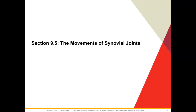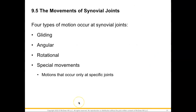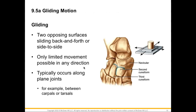Welcome to section 9.5 on the movements of synovial joints. We have four types of motion at our synovial joints: gliding movement, angular, rotational, and some special movements that take place in specific joints. We'll start off with our gliding movements, and this picture should look familiar to you.